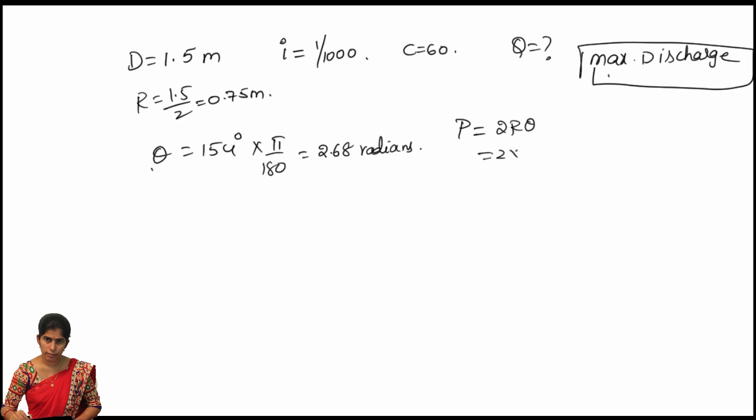Perimeter is equal to 2Rθ: 2 multiplied by 0.75 multiplied by 2.687, so we got a value of 4.031 meters. And next we have to find out the area.